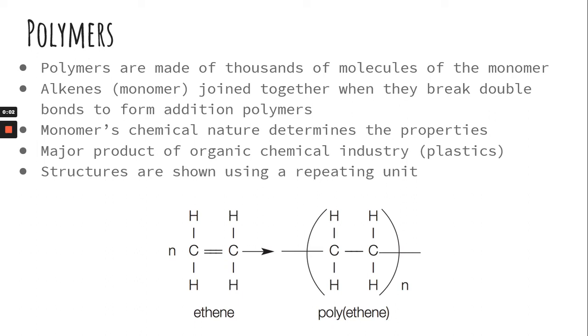Polymers are made up of monomers, so poly meaning many, mono meaning one. So you take the monomer and you repeat it thousands of times and you get the polymer.